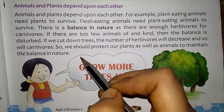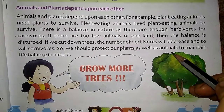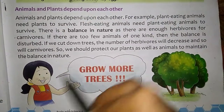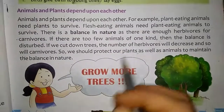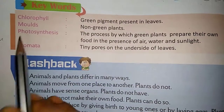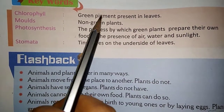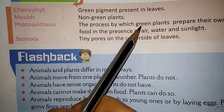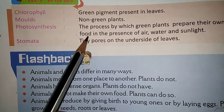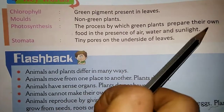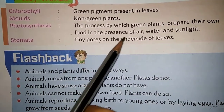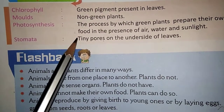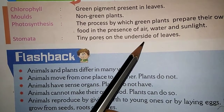So we should protect our plants as well as animals to maintain the balance in nature. Grow more trees. Chlorophyll is the green pigment present in leaves. Molds are non-green plants. Photosynthesis is the process by which green plants prepare their own food in the presence of air, water and sunlight. Stomata are tiny pores on the underside of leaves.